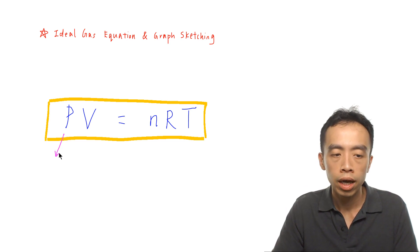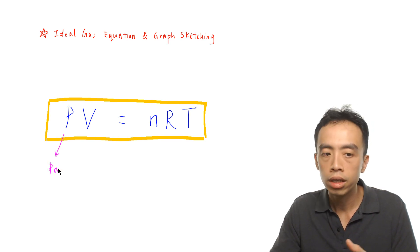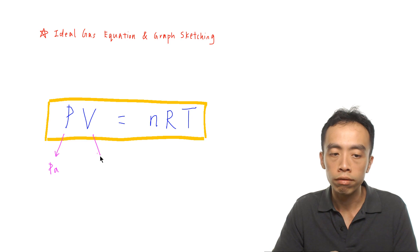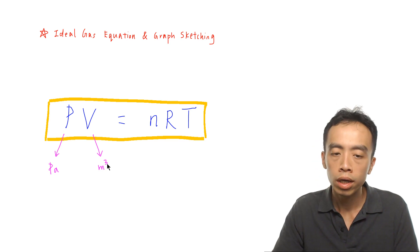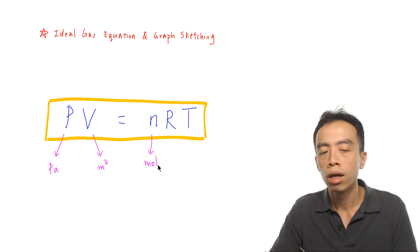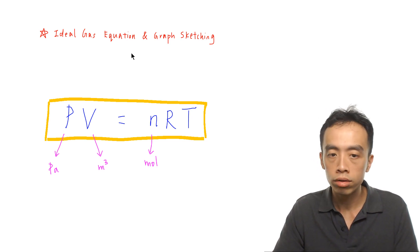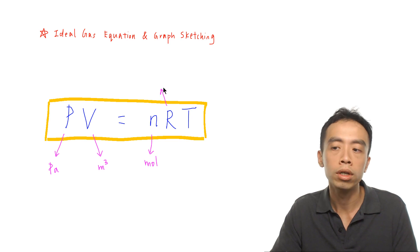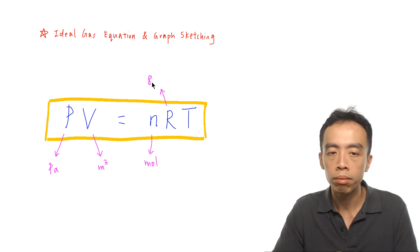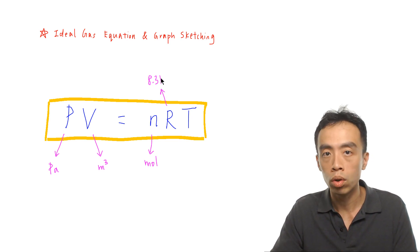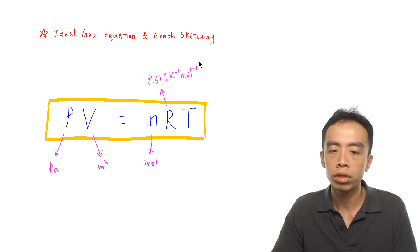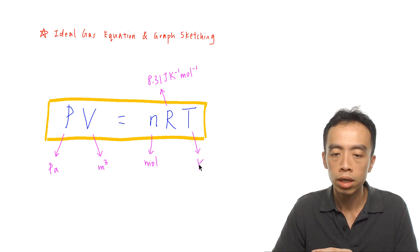The ideal gas equation is given by PV equals nRT. Let's go through each term part by part. P is for pressure and the unit is Pascal. V is volume and the unit must be in meter cubed. n is the number of moles, in moles. R is the gas constant, with a value of 8.31 joules per kelvin per mole, found in the data booklet. T is temperature, in kelvin.